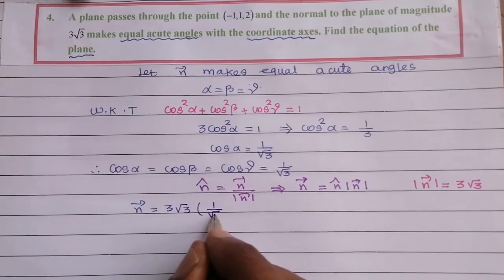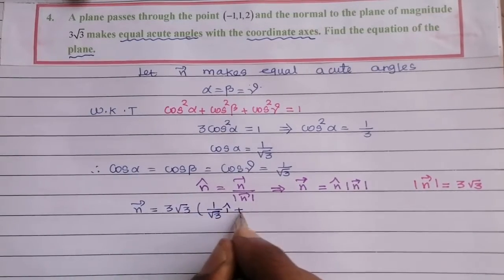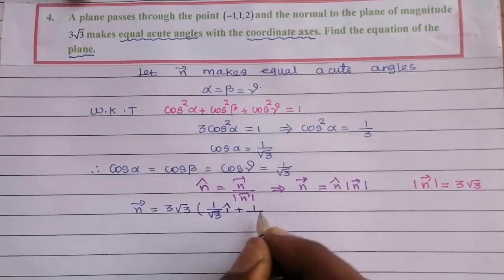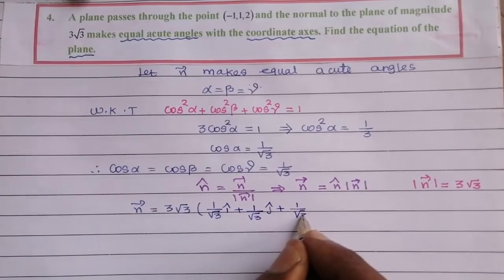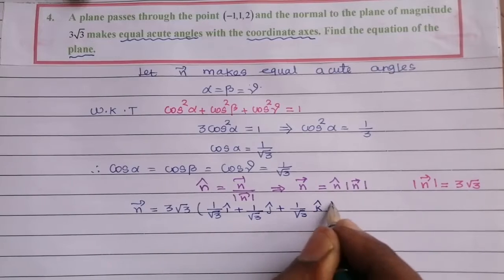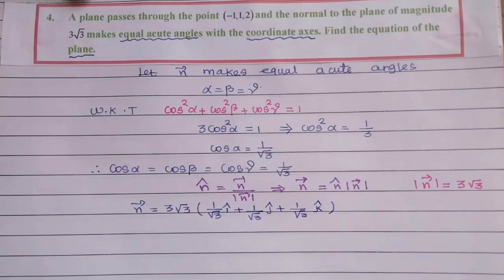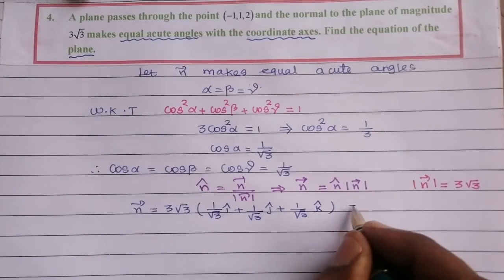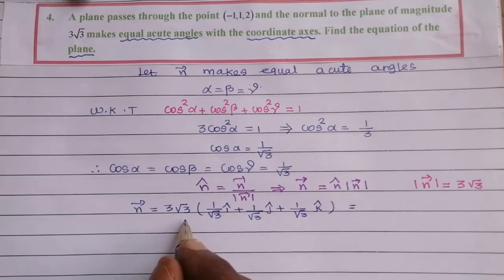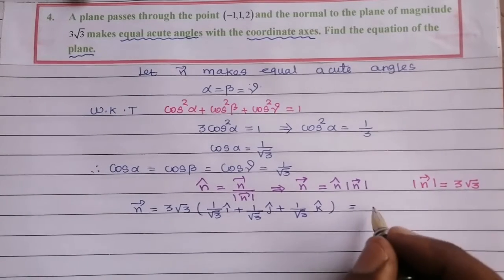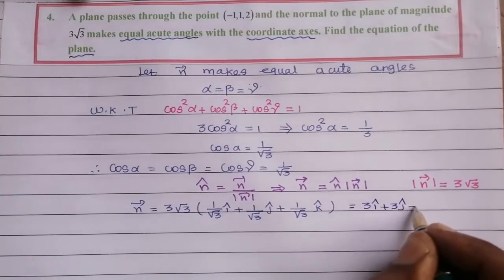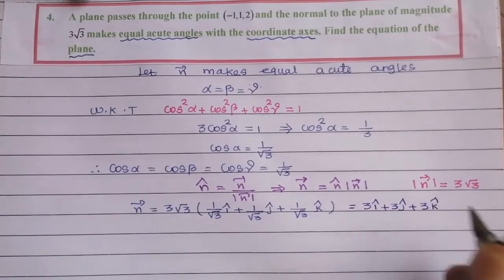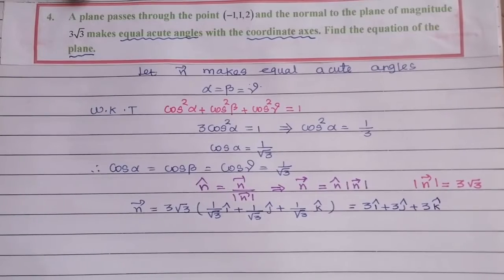Since n-hat makes equal angles, n-hat = (1/√3)î + (1/√3)ĵ + (1/√3)k̂. Using the formula, with √3 cancelling, n-vector = 3î + 3ĵ + 3k̂.